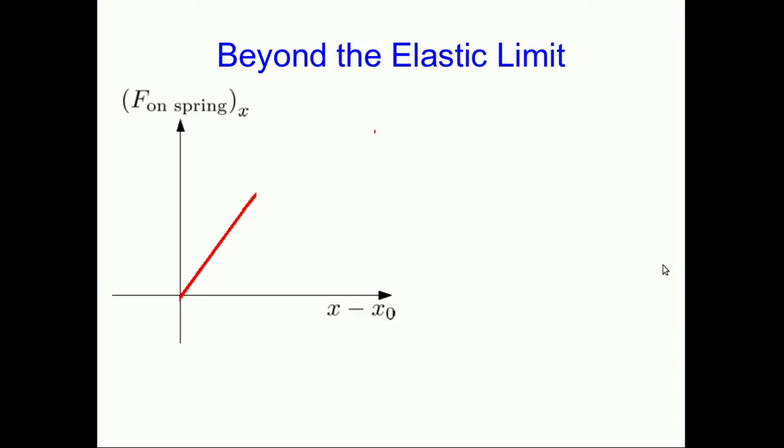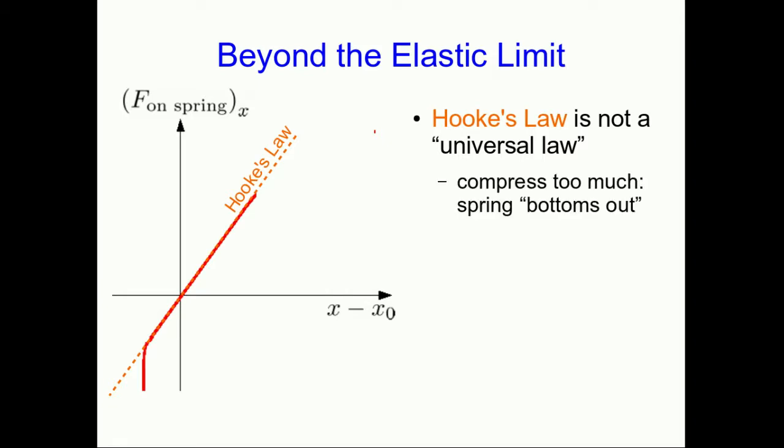Remember that with the choice of axes I made, positive values of the displacement of the end of the spring corresponded to stretches. Negative values would correspond to compression, and the springs I was using were too floppy to put them in compression, but I could use other springs and see that the linear relationship between the force on the spring and the displacement of its end continues into compression. However, Hooke's law is not universal. You can push things too far, and things deviate from the straight line that is what Hooke's law says. For example, if you compress too much, eventually the coils start getting in each other's way, and the spring does what's called bottoming out. And now a very large increase in the force leads to a very small change in the displacement of the end.